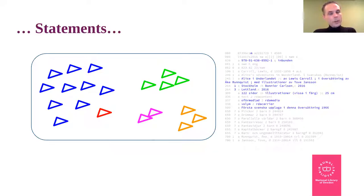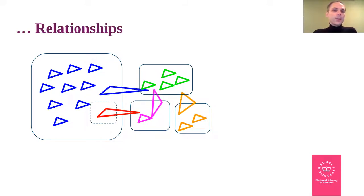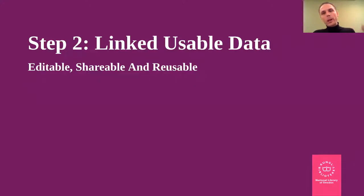Understanding and working with this data — trying to find what people are trying to express, understanding it more as statements about entities or triples, which we think in when we consider RDF, which linked data is based on — and then, even more importantly, linking these entities together. That's the gist of the movement from MARC 21 into a library knowledge graph. The important aspect here is usability.